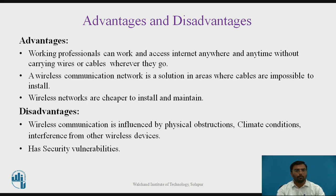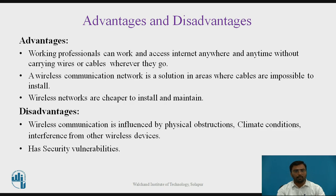The disadvantages of wireless communication: it is influenced by physical obstruction, climate conditions, and interference from other wireless devices. Climate conditions and interference from other wireless devices are the main problems. Additionally, hackers can easily hack data over wireless communication — that is, there are security vulnerabilities in wireless communication.